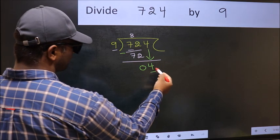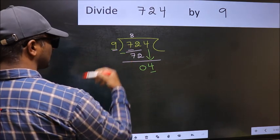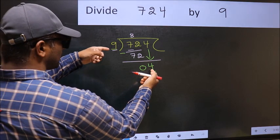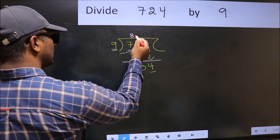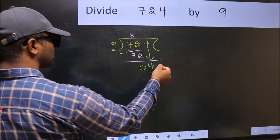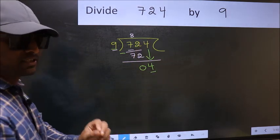Here we have 4 and here 9. 4 is smaller than 9. So what many do is they directly put dot and take 0, which is wrong.